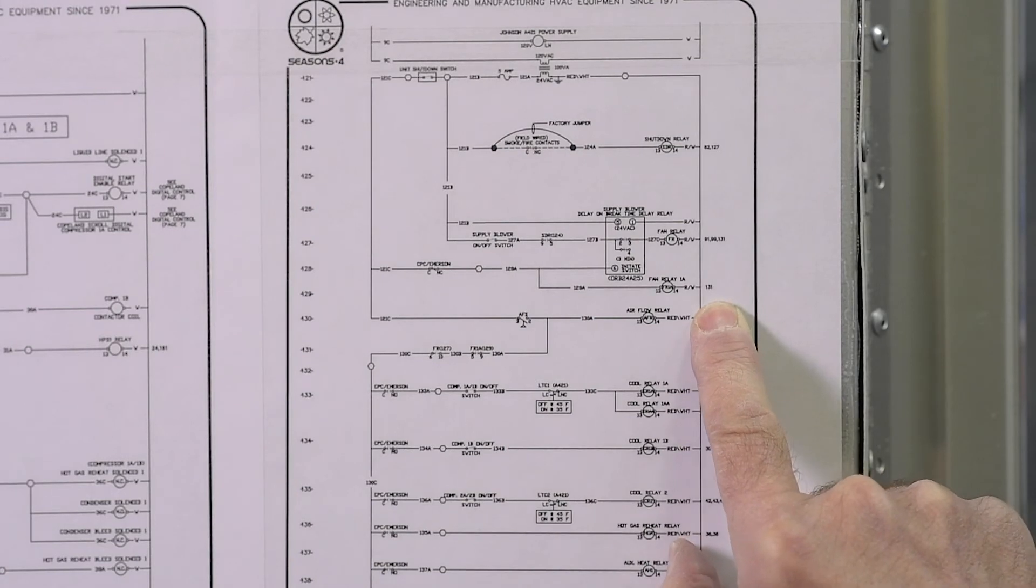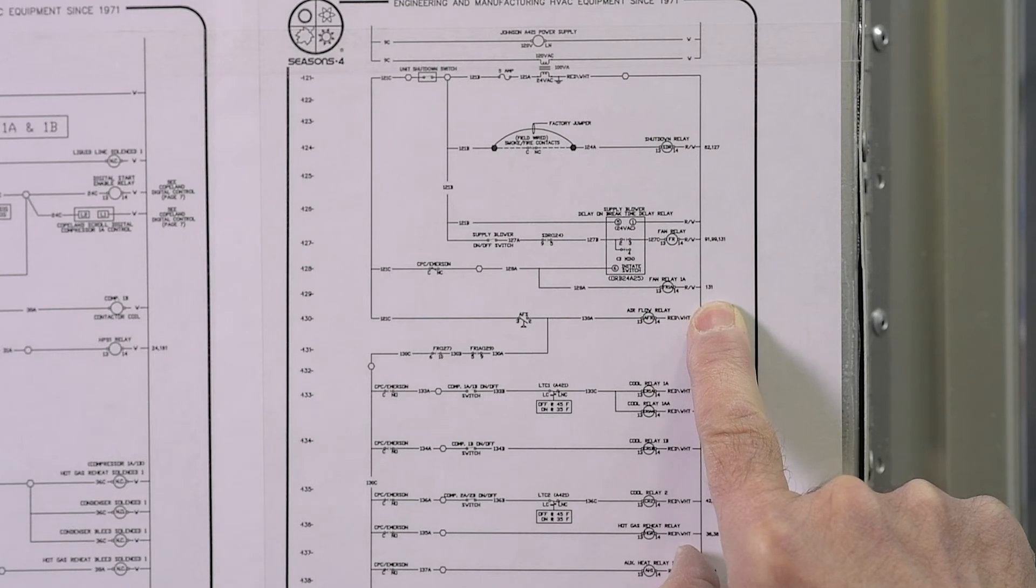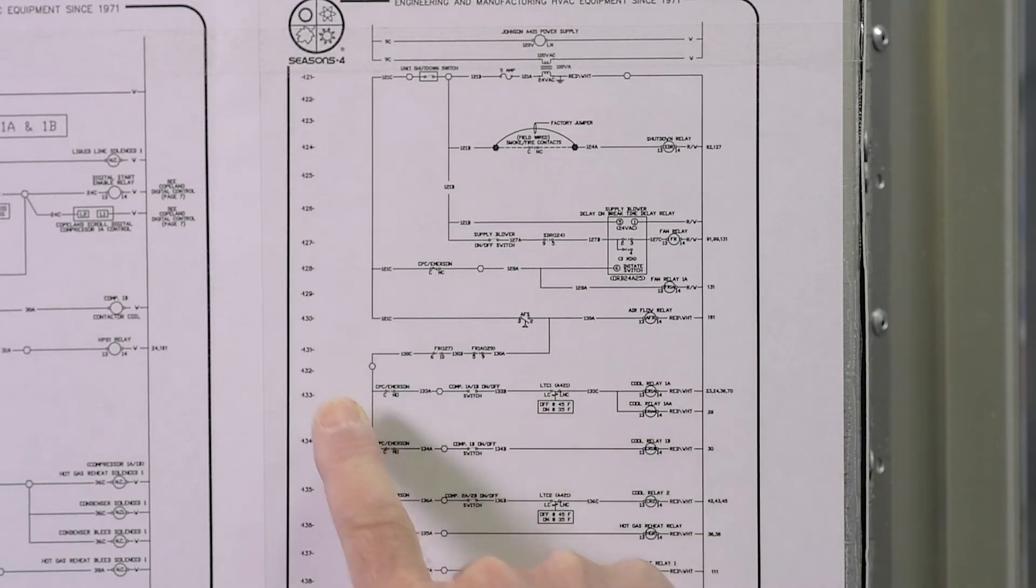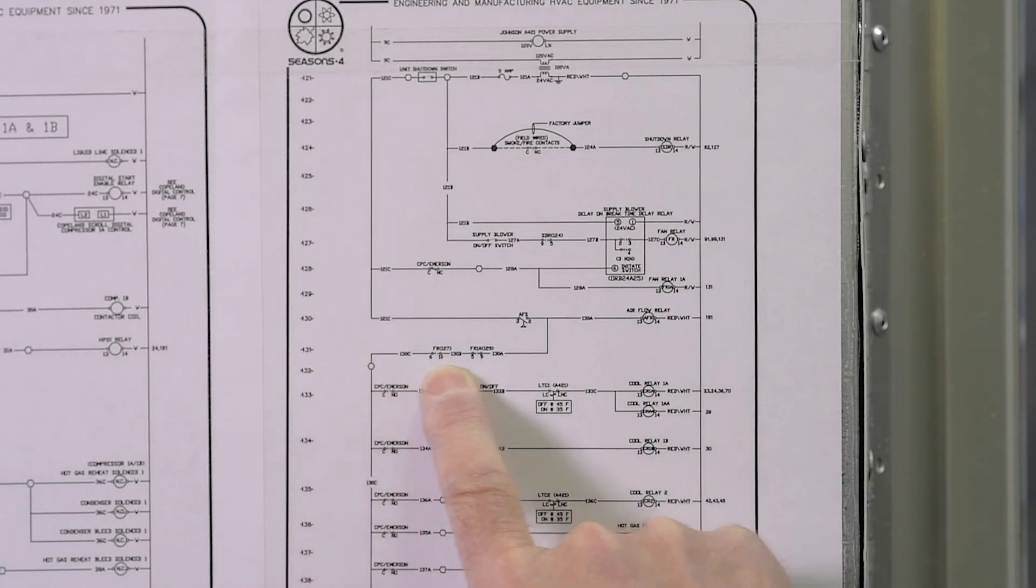Look to the right side of the relay. It has a reference of 131. That's line number 131. Go to 131 and then come over and you'll find a contact for that relay FR1A.